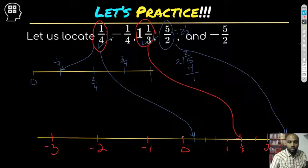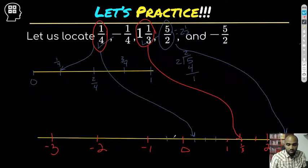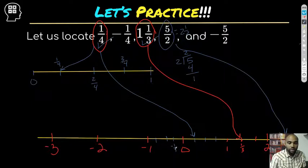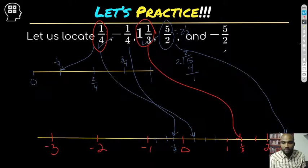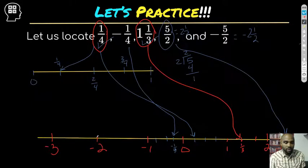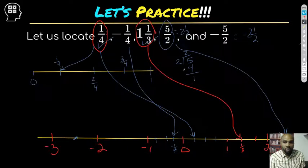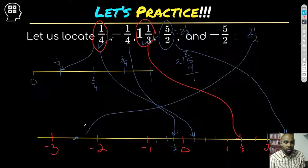Now let's do the negatives. Negative one fourth is between zero and negative one. I'm going to break that space into four sections — negative one fourth, negative two fourths, negative three fourths, negative one. As it goes to the left the number seems to get bigger, but it's not because it's negative. And negative five halves equals negative two and one half — so my half mark is right there.